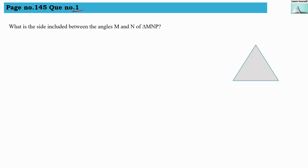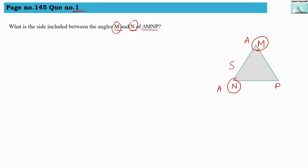Question number 1: What is the side included between angles M and N of triangle MNP? So this is our triangle M, N and P. Now the side included between angle M and angle N — the side connecting these two vertices — is side MN. So the answer is MN.